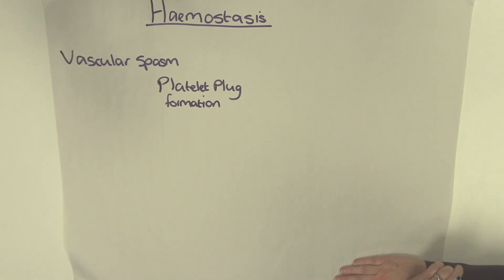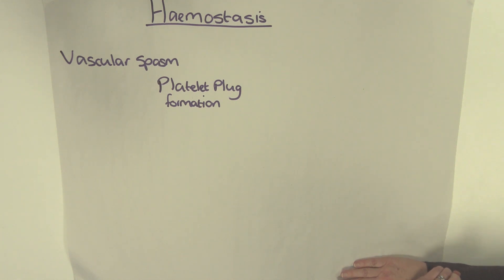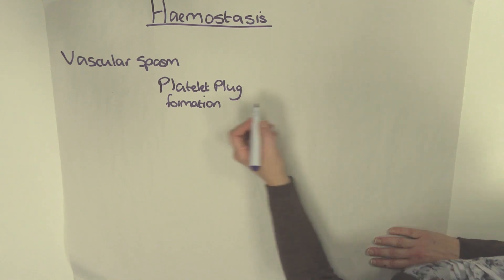Platelet plug formation is the next stage. Platelets, although small, contain many chemicals including clotting factors, enzymes, and hormones. Platelets will stick to the collagen and connective tissue which has been exposed by the damage to the blood vessels. This is known as platelet adhesion.